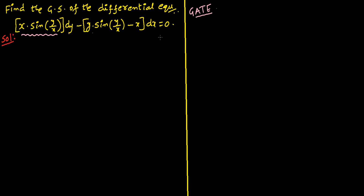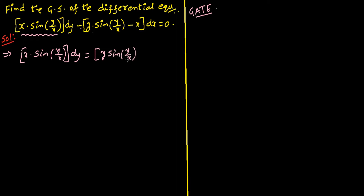This differential equation can be written as x times sine(y/x) dy equals — transferring the other term to the right hand side — you get y times sine(y/x) minus x, all times dx.